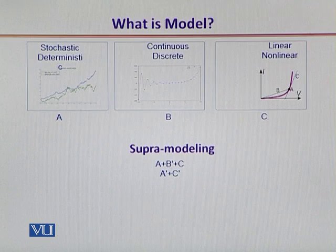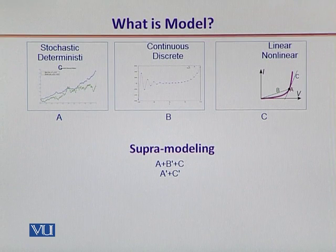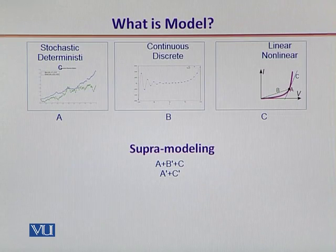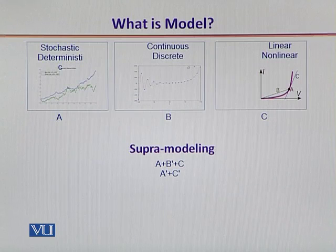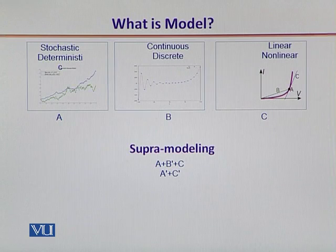With an understanding of these basic types of computer models, it is appropriate to mention that these models are not defined in isolation from each other. There is a way of supra-modeling in which variants of these models are integrated together to realize an approximation to the real world. As an example, three different kinds of models are shown: stochastic versus deterministic, continuous versus discrete, and linear versus non-linear.